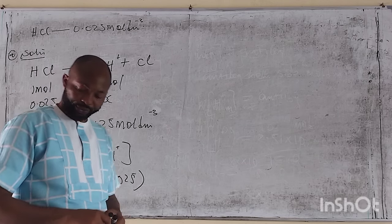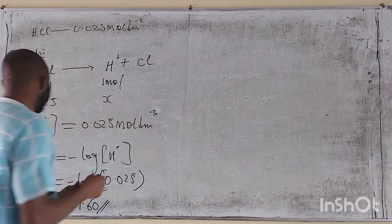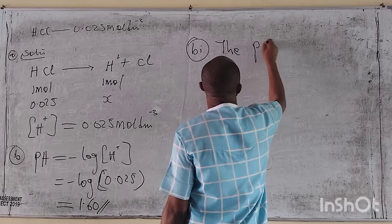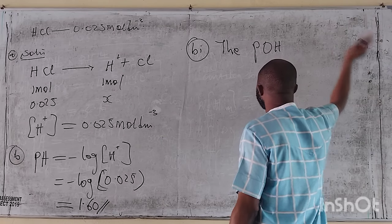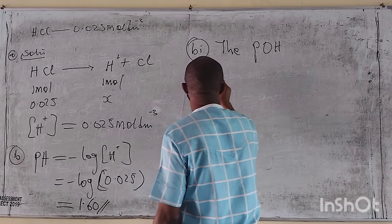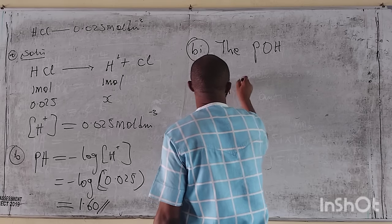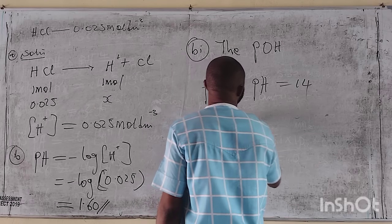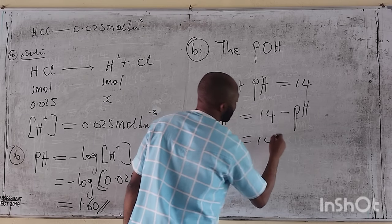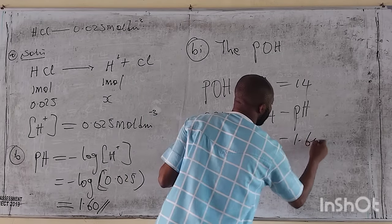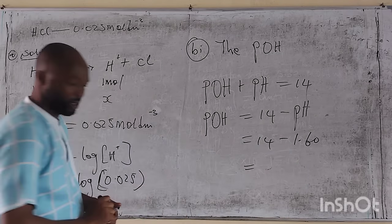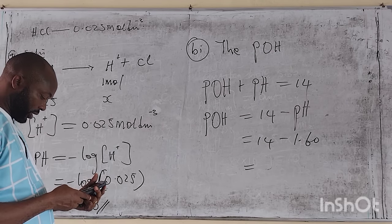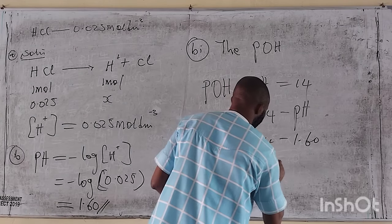Now for the pOH: in dilute solutions, pOH plus pH equals 14. Therefore pOH equals 14 minus pH, which is 14 minus 1.60, giving pOH equals 12.4.